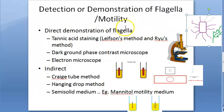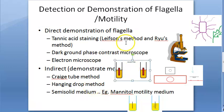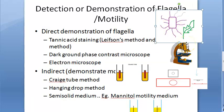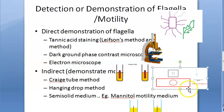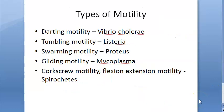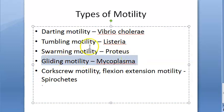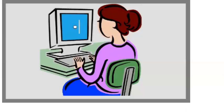Demonstration: direct methods allow you to directly view the flagella - tannic acid staining or Leifson's method, dark ground microscopy, and electron microscopy. Indirect methods demonstrate motility: Craig's tube, hanging drop, and mannitol motility medium. Types of motility: darting in Vibrio cholerae, swarming in Proteus, corkscrew flexion-extension in spirochetes, gliding in Mycoplasma, and tumbling in Listeria.